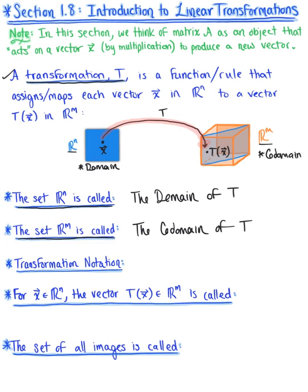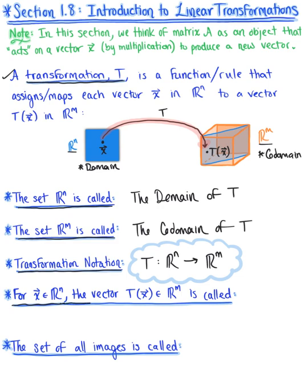So how are we going to denote a transformation? Our transformation notation is capital T such that we take a vector in Rn and map it to a vector in Rn. Now we need to specifically define this new vector T of vector x in Rn. For every vector x in Rn, the vector T of vector x in Rn is called the image of vector x under the action of T.